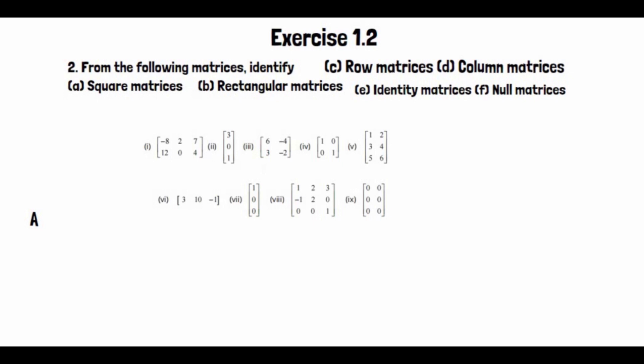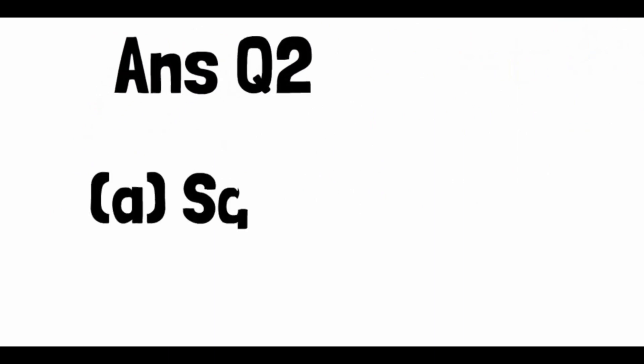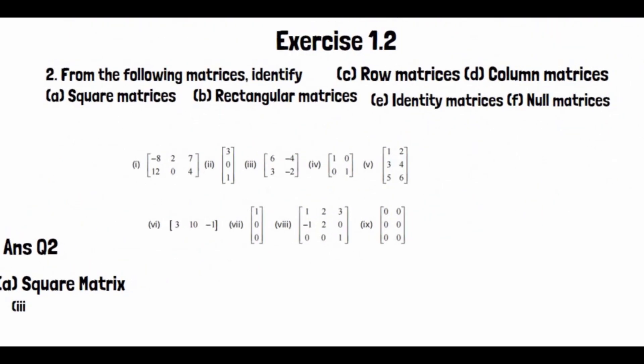Now let's write the answer to Question No. 2. Category A is square matrices. A square matrix is one where the number of columns and number of rows are equal. Part number 3 falls into square matrices, and part number 4 also falls into square matrices, as does part number 8.